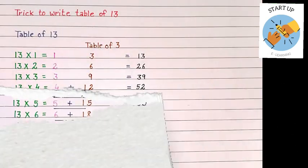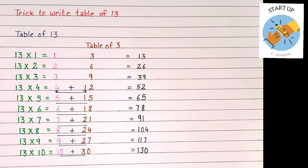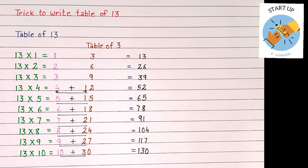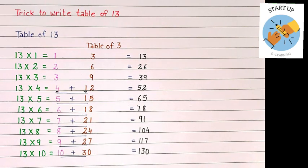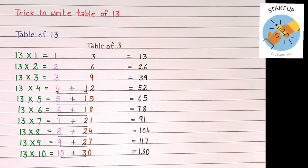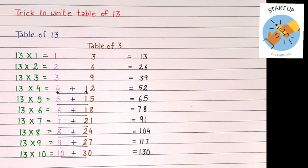See the next one, it is written 6 plus 18. 6 plus 1 will become 7 and 8 at the end, 78. Just like that, 7 plus 2 is equal to 9 and then 1, 91.